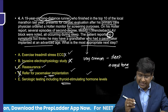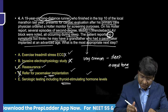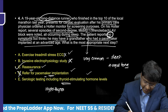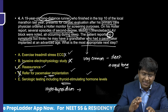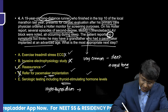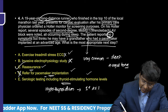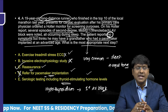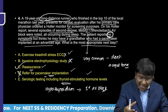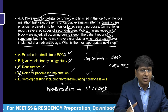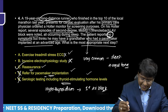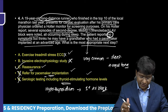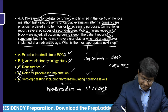Regarding serological testing including TSH: in hypothyroidism, bradycardia can occur, but it most commonly produces first-degree AV block, not second-degree AV block. Furthermore, there are no other features of hypothyroidism in this patient. TSH testing is therefore ruled out. The answer is simply to reassure the patient.